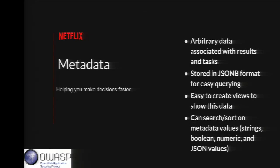Now that you've seen a quick intro to Scumblr, let me walk through what makes Scumblr 2.0 different. The first new feature is metadata. When we pulled in GitHub repositories, we had information about whether they're public, the repo name, and who owns it. This works because of the ability to add metadata to results — it uses the JSONB format of PostgreSQL and can store anything in JSON. This makes it easy to create new views, search, sort, and filter. For example, finding all your GitHub repos that are private is just a quick search.